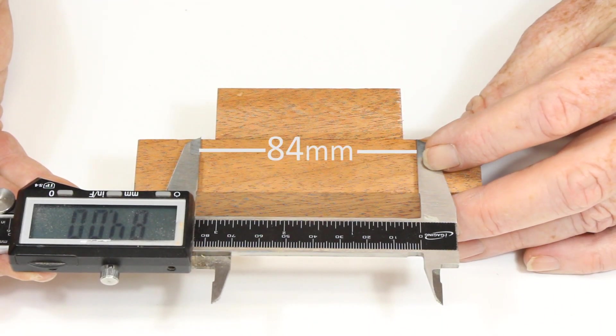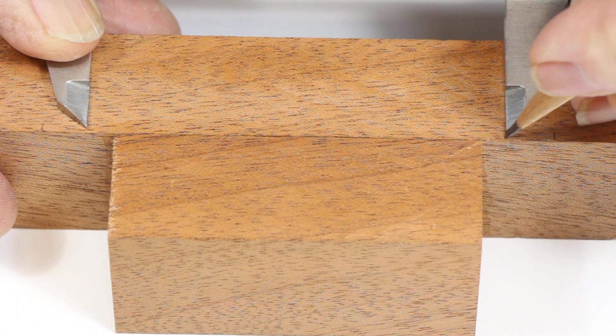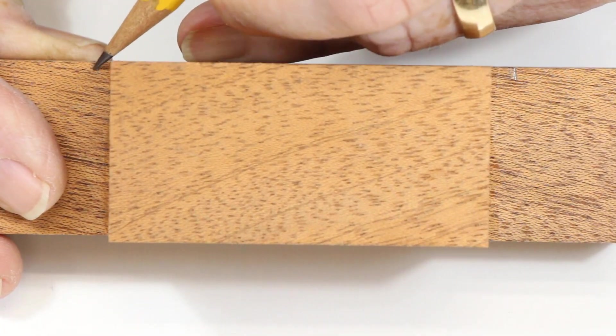Next, I marked the two holes for the rod with my calipers and drilled them. Take your time to locate the drill bit as accurately as you can.